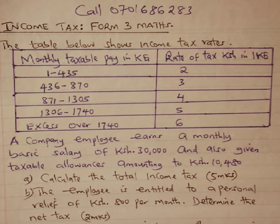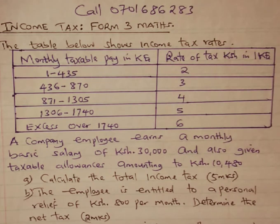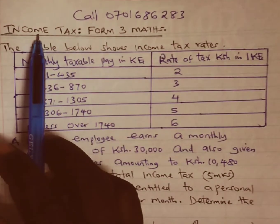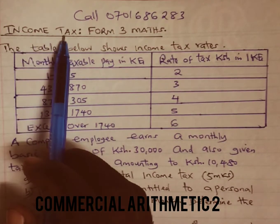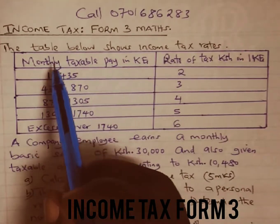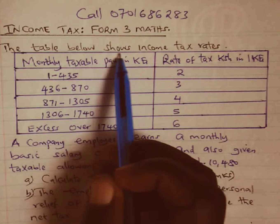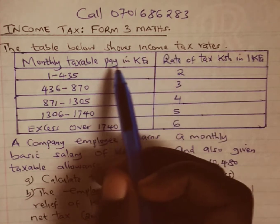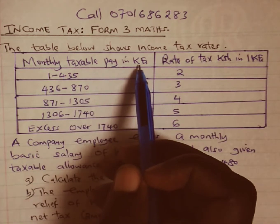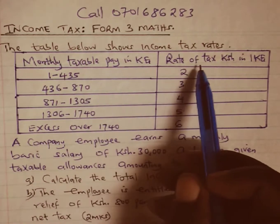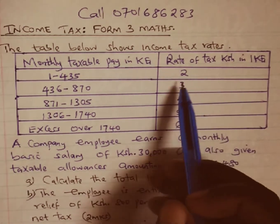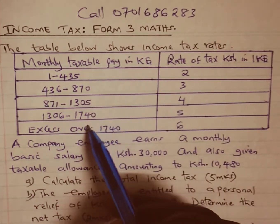Welcome to today's discussion. We are looking at commercial arithmetic 2, under a section on income tax — this is form 3 mathematics. The question involves a table showing income tax rates, with monthly taxable pay in Kenyan pounds and the rate of tax in shillings per pound. These are the tax brackets we are going to use to calculate tax.